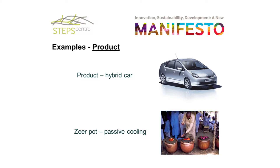The most commonly known is product innovation. Most people might think of a hybrid car — a high-tech product drawing on relatively new scientific knowledge, recombining it in novel ways. But as well as these high-tech innovations, we're also interested in innovations that draw on other forms of knowledge. Another example might be a zeapot — a technology with a long history in Middle Eastern cultures — which uses passive cooling to keep food products fresh without electricity or external energy, working on the basis of evaporation.